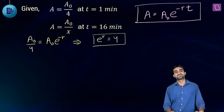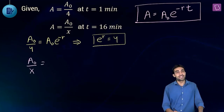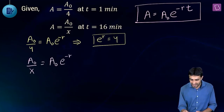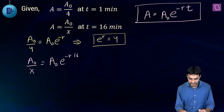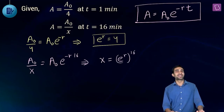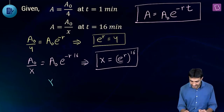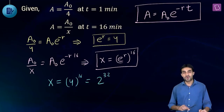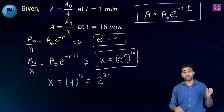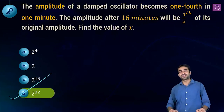For the second equation: at t = 16, amplitude = A₀/x = A₀·e^(−R·16). This means x = (e^R)^16. Substituting e^R = 4: x = 4^16 = (2²)^16 = 2^32. So the value of x is 2^32. We mark option D as the correct answer.